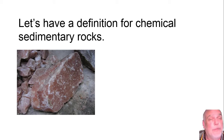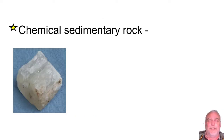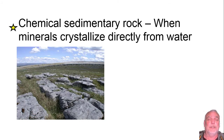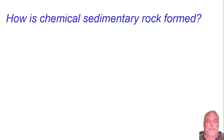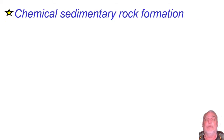Let's get started with chemical sedimentary rock. The definition of chemical sedimentary rock is when minerals crystallize directly from water. What happens is minerals dissolve in water and then crystallize back out of that water.